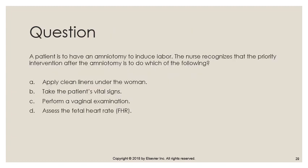Review question: A patient is to have an amniotomy to induce labor. The nurse recognizes that the priority intervention after the amniotomy is to assess the fetal heart rate to rule out the presence of a prolapsed cord. Thank you for your time, and I hope you enjoyed the presentation.